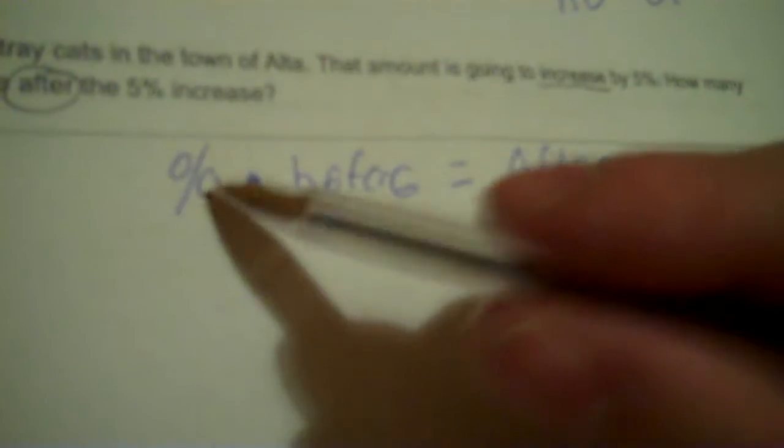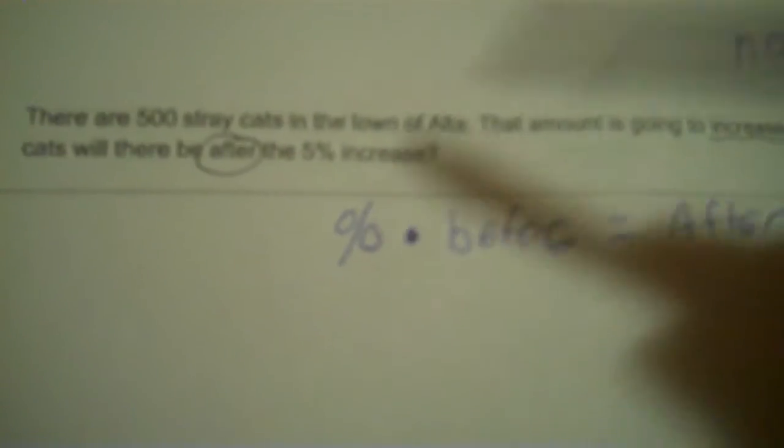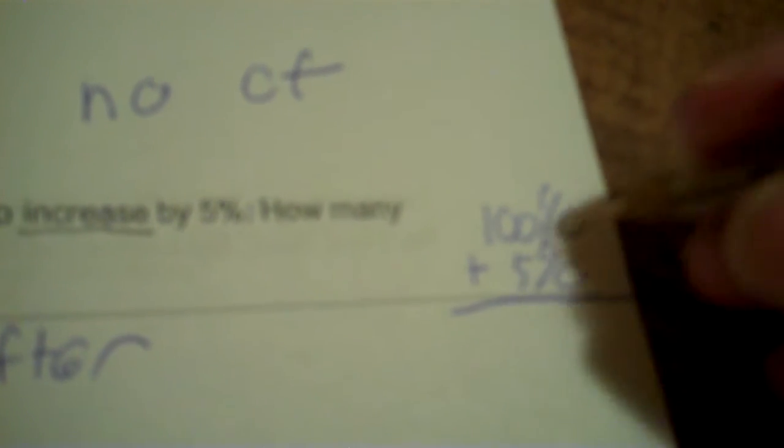Now, you got to be careful with your percent. Don't just put in 5. You put in that, it's going to be wrong. What you need to do to fill in the percent is you need to always start with 100% and then you either add or subtract the percent. Since it says increase, we're going to add it. So 100 plus 5 is 105%. Now, you need to put the decimal at the end and move it twice this way, left, backwards, whatever you want to call it. One, two. So your percent factor is 1.05.